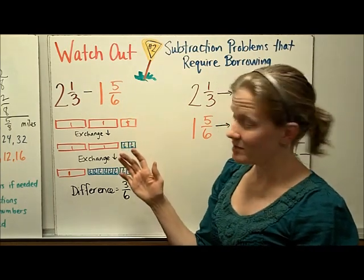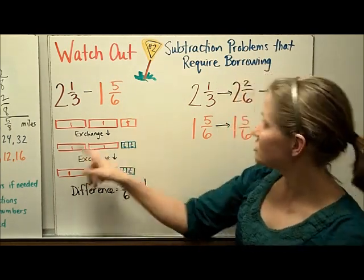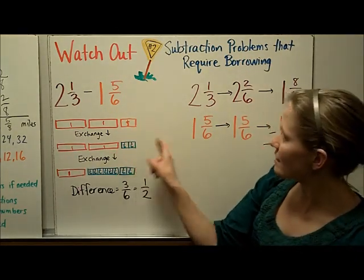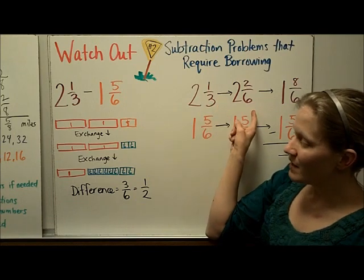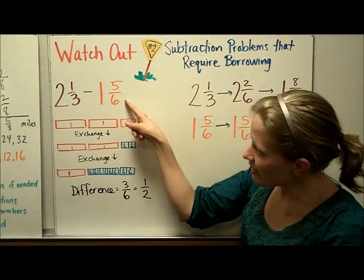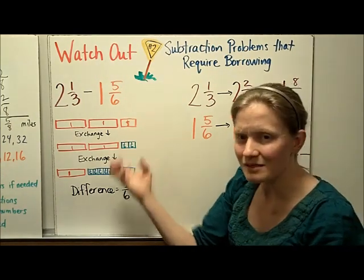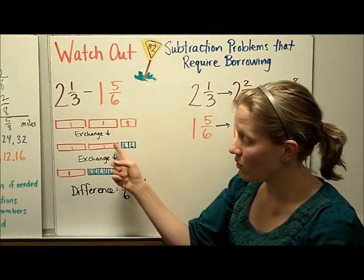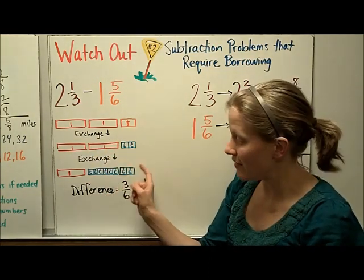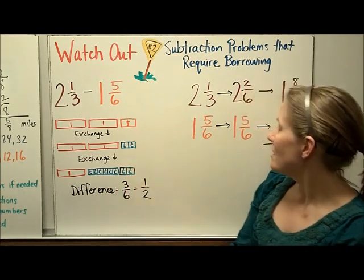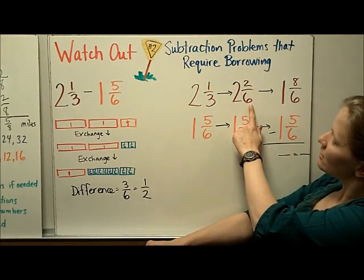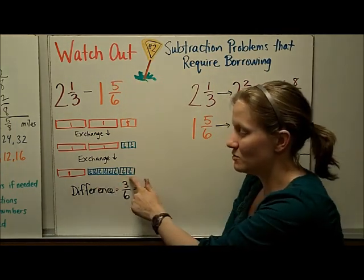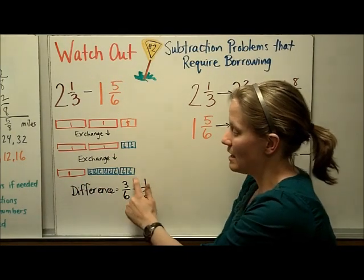Now we need to get our denominators to be the same. So we're going to make an exchange and you can see that here. I'm going to turn the 1/3 piece into 2/6. I've done that here. Now, if I'm trying to take away 5/6, I still don't have 5/6 that I can pull out. So I'm going to have to make another exchange. I'm going to have to change this 1 whole into 6/6. And add that to the 2/6 I already have. So, here I have changed the 2 and 2/6 into 1 and 8/6. And if you counted this, this would be 8/6 right here. So now we have 1 and 8/6.